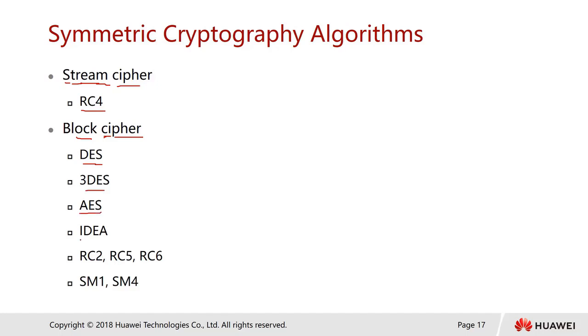We also have AES, IDEA, RC2, RC5, RC6, SM1, and SM4. The higher it goes, the more bits are used for encryption, providing higher protection but slower encryption and decryption.